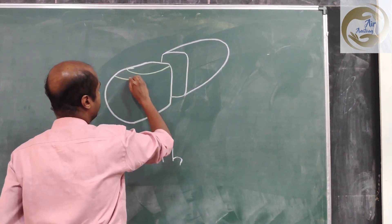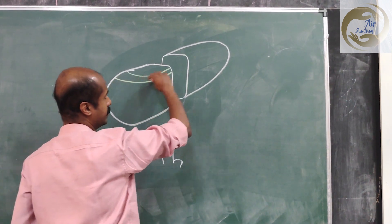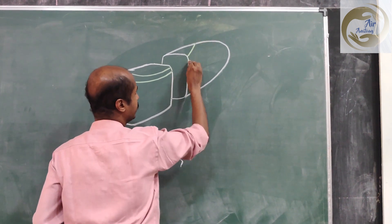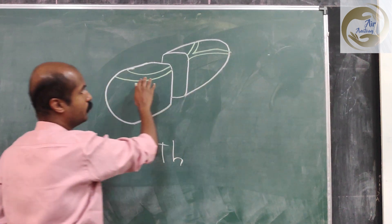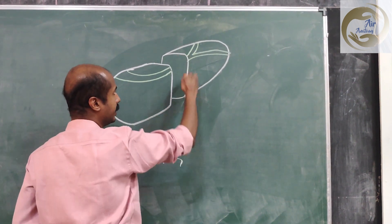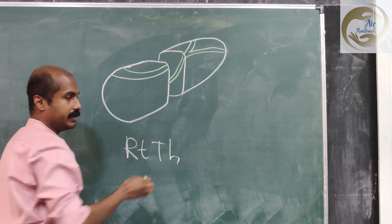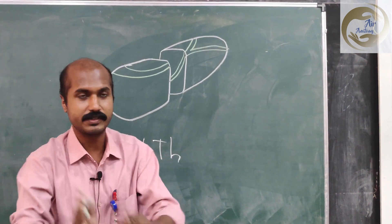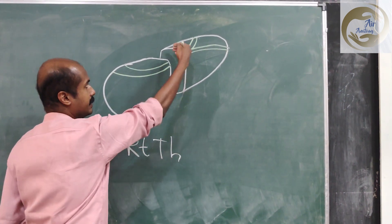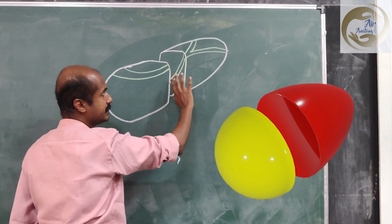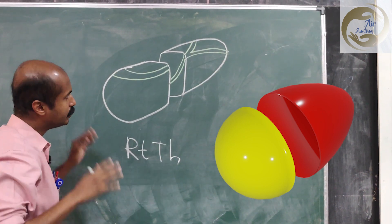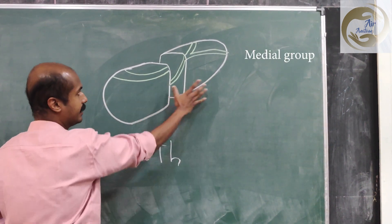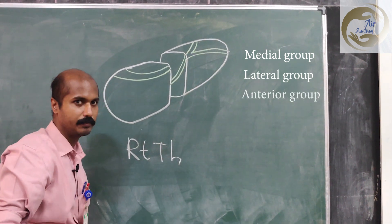The internal medullary lamina runs from the posterior to the anterior side. It forms a Y-shape — running posterior to anterior like a Y, and also from inferior to superior like a Y. You can see both dimensions in this drawing. From this picture, you can now easily identify the medial group of nuclei and the lateral group of nuclei.